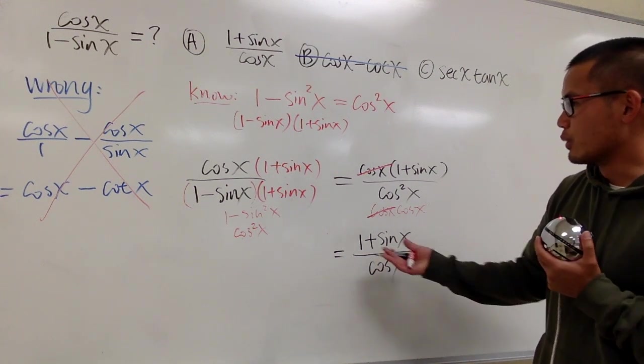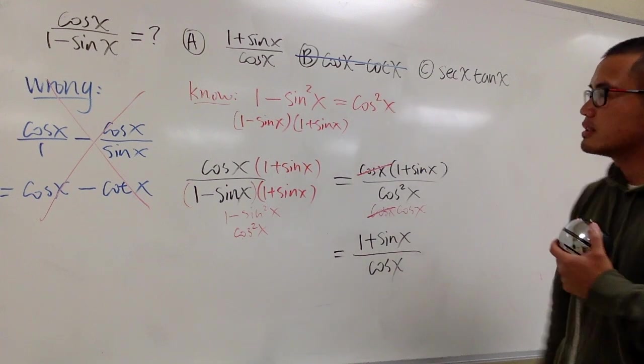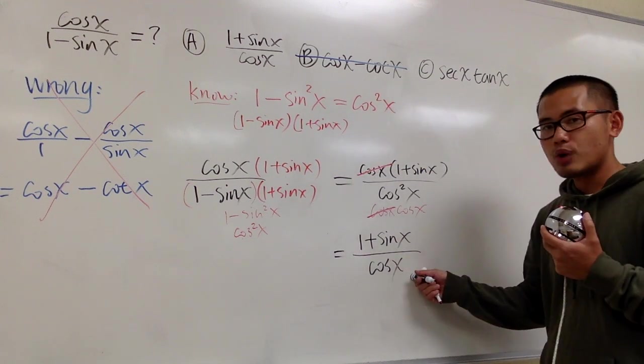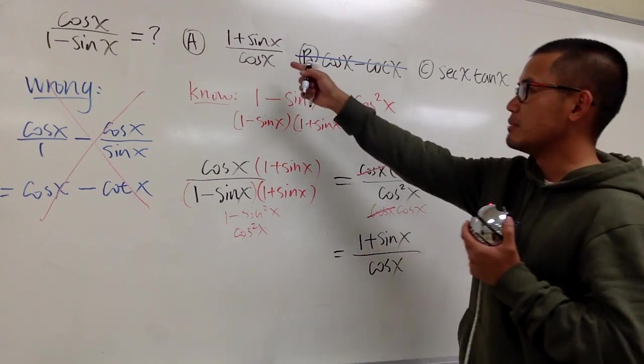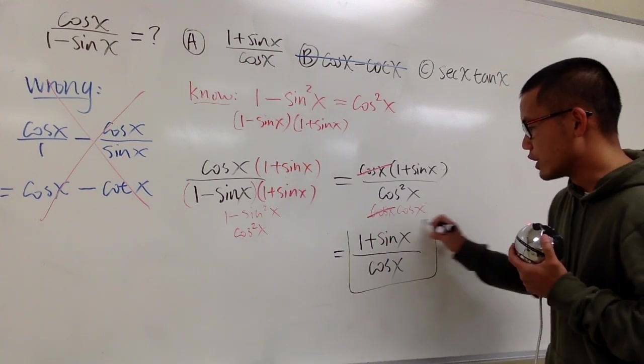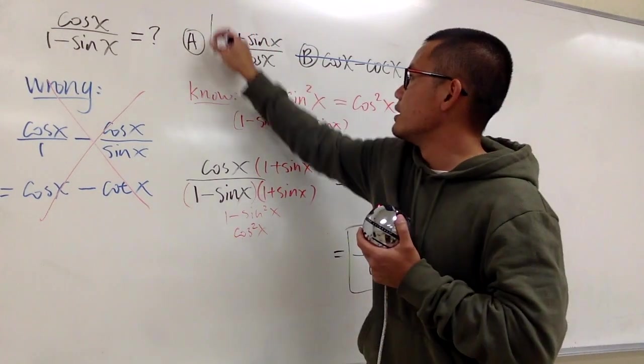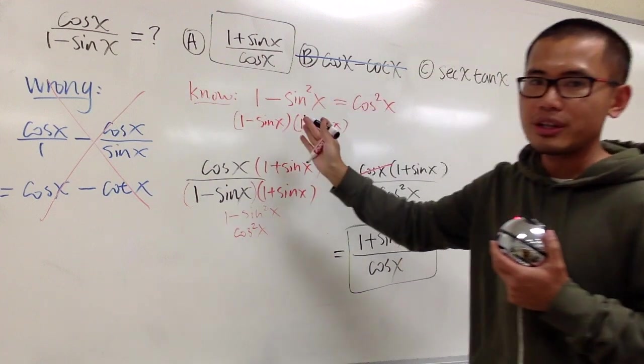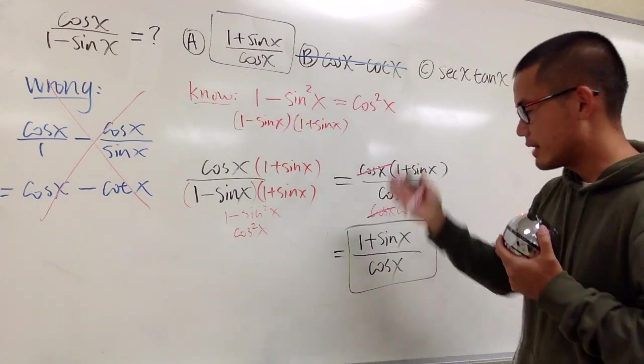Well, we did a lot of work already. We go back to the answer choices. And you see that this right here is exactly the same as answer choice A. So we can be done right here already. This right here will be the answer. That's it.